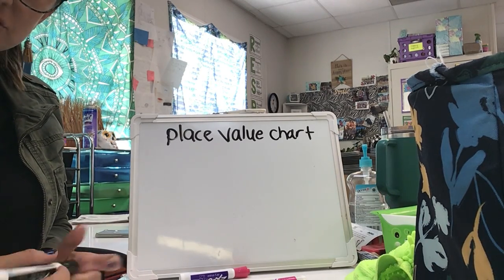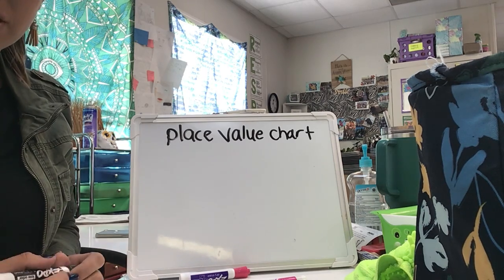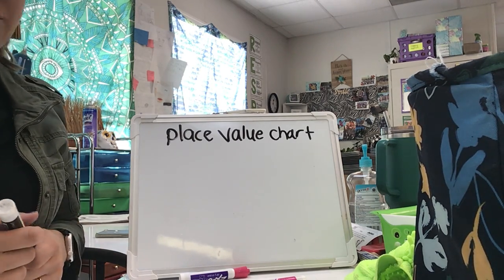This is how to use a place value chart to solve a two-digit plus a two-digit addition equation. Some equations are going to have regrouping and some will not have regrouping.